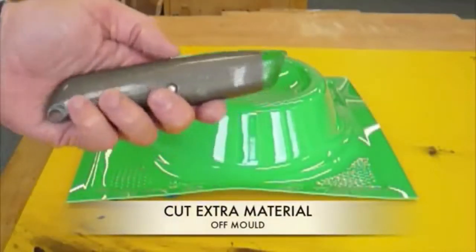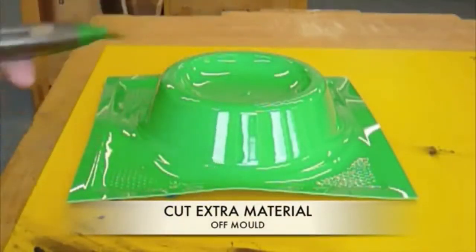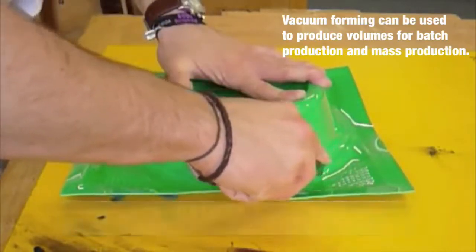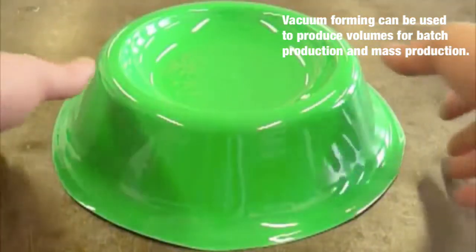Finally, being very careful, you can use a sharp knife and a cutting board to cut the excess plastic from your mold. Congratulations, you now have a perfect vacuum formed mold.